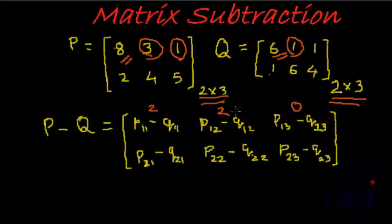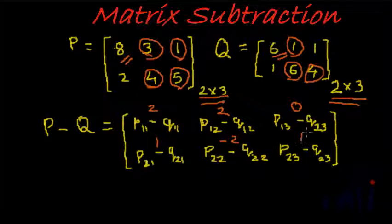And P 2 1 minus Q 2 1, which is 2 minus 1, which is 1. P 2 2 minus Q 2 2, which is 4 minus 6, which is minus 2. P 2 3 minus Q 2 3, which is 5 minus 4, which will be 1.